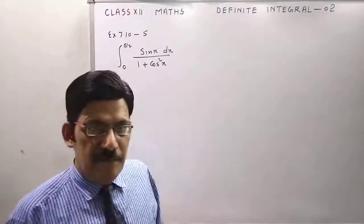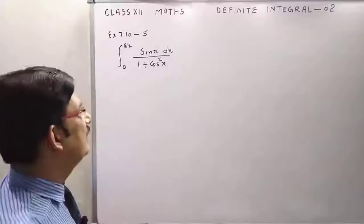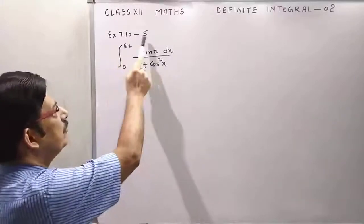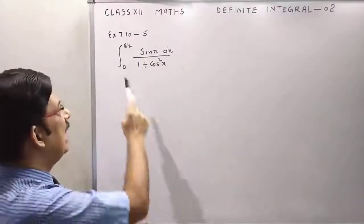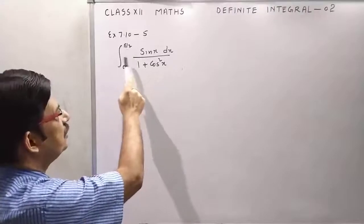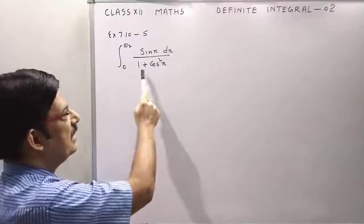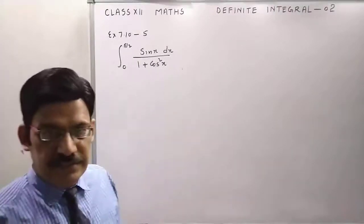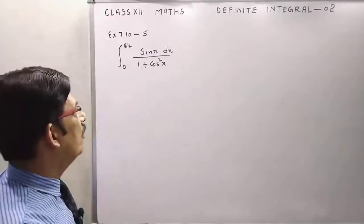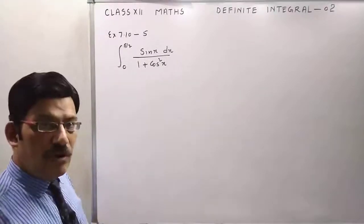Students, let's take an example of the substitution method: Exercise 7.10, question number 5. We have the integral from 0 to pi by 2 of sine x dx over 1 plus cos squared x. Now first of all, we have to suppose cos x as the substitution variable.